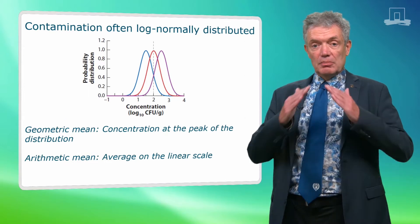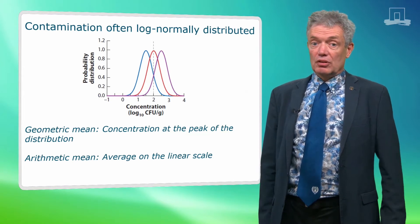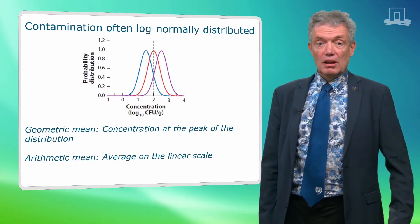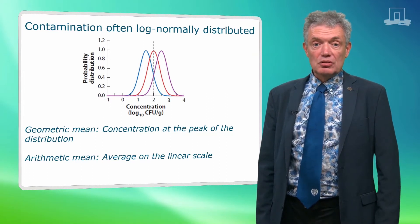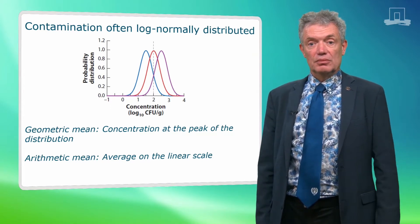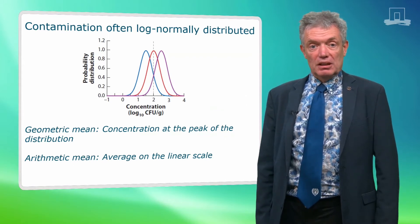The concentration at the peak of the curve is called the geometric mean concentration. This is however not the mean of the concentrations on the normal linear scale since that mean is influenced more by the higher values of the right hand tail of the distribution. The average of the linear scale is called the arithmetic mean.